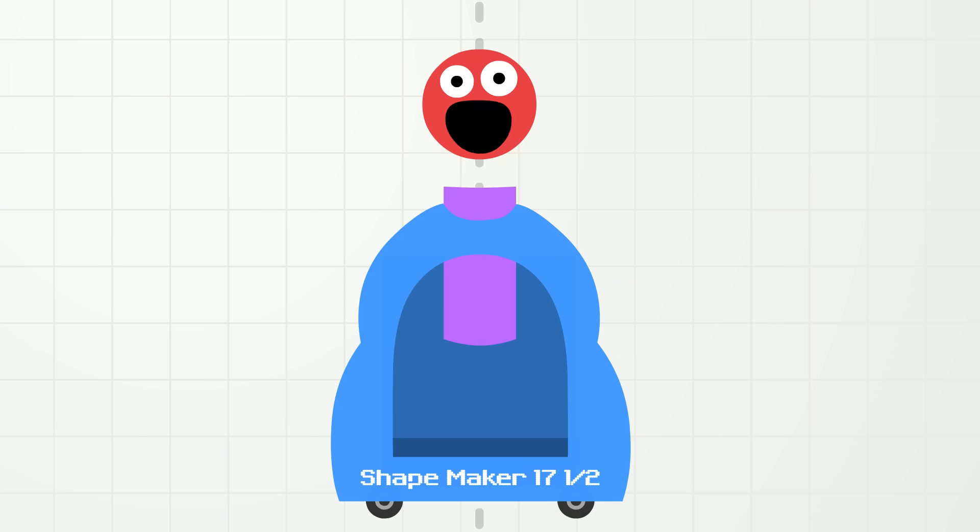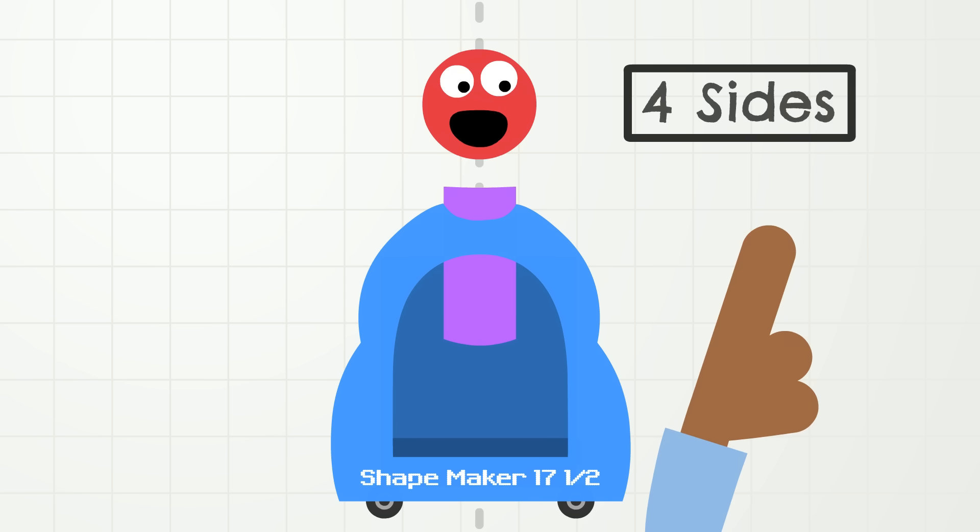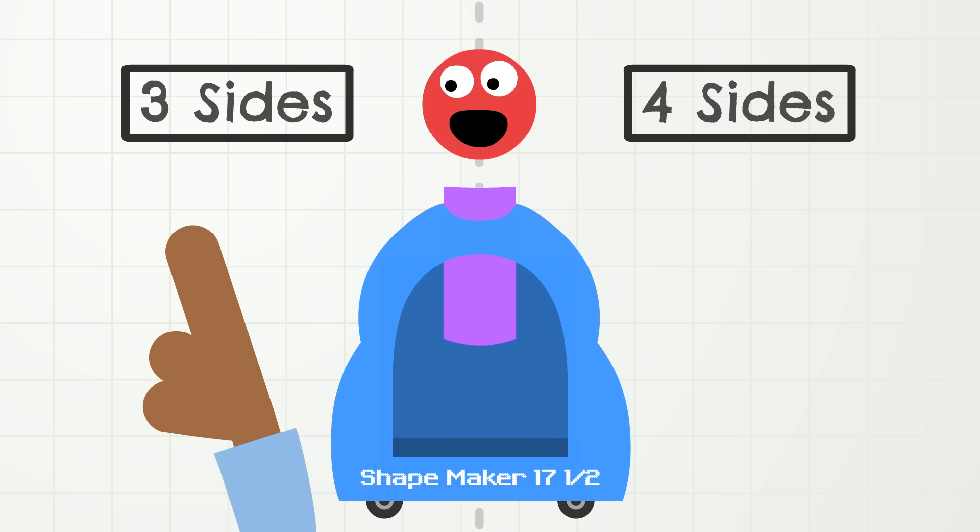This time the attribute is number of sides. If the shape has four sides, it should go on the right side, and if the shape has three sides, it should go on the left side. Okay, ShapeMaker 17 and 1 half, start!